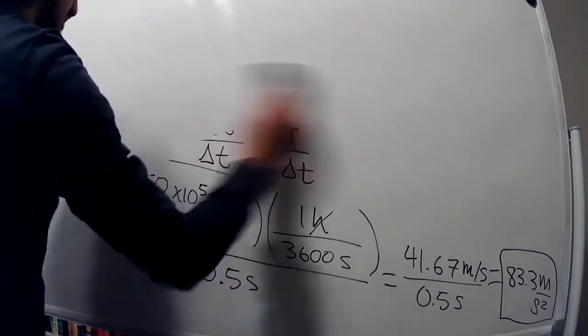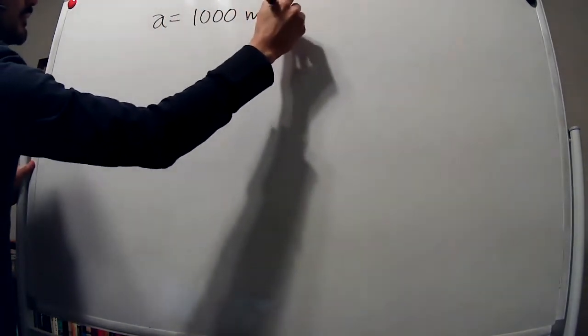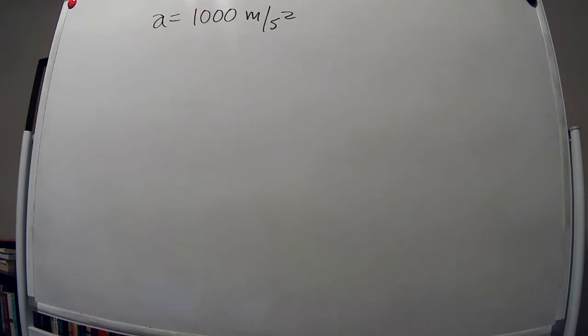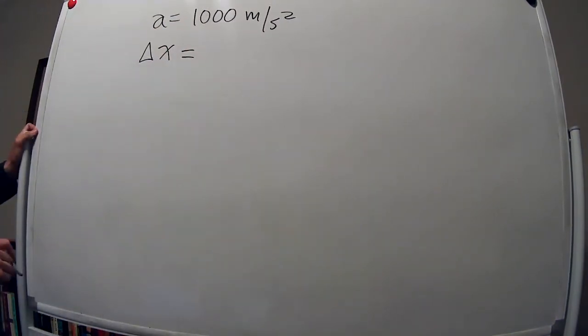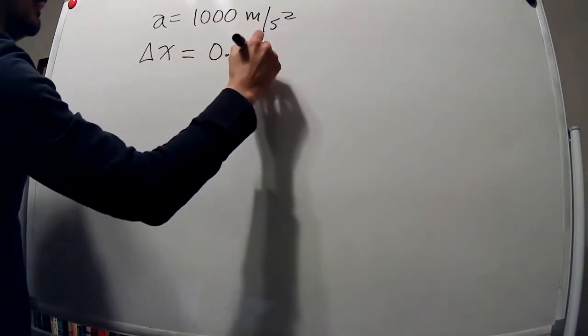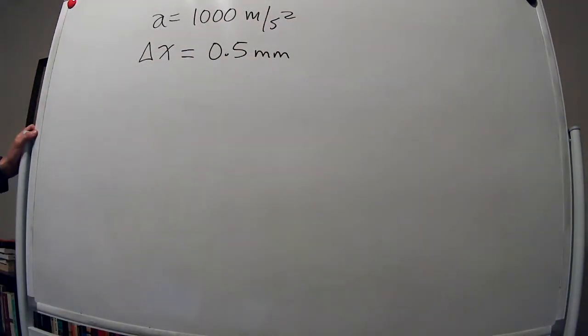The second problem is only a bit more complicated. When jumping, a flea accelerates at an outstanding 1,000 meters per second squared, but over the very short distance of 0.5 millimeters. If the flea jumps straight up and air resistance is neglected — which is a bad approximation since fleas are very light — how high does the flea go?